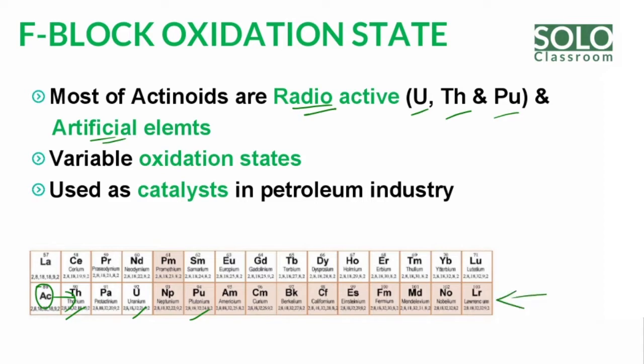In the case of this periodic table, there are elements with specific atomic numbers. This F-Block Actinoid series starts from atomic number 89.